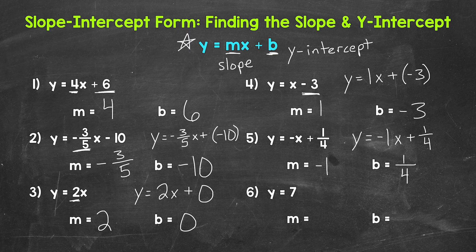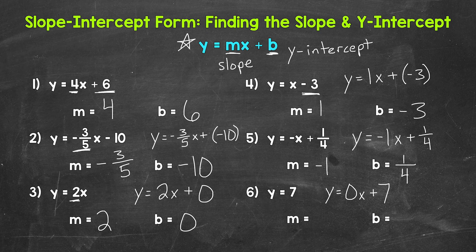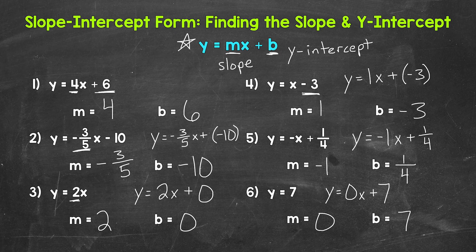Lastly, let's move on to number six, where we have y equals 7. We can rewrite this as y equals 0x plus 7 — that's a positive 7. Now we can see that our slope is zero and our y-intercept is 7. Since we have zero x, which is just zero, we can write slope-intercept form without it as just y equals 7. Remember, a slope of zero means we have a horizontal line, so this is just a horizontal line that goes through 7 on the y-axis.